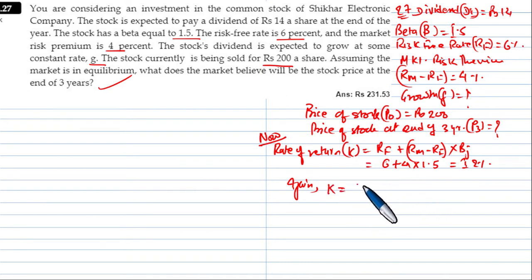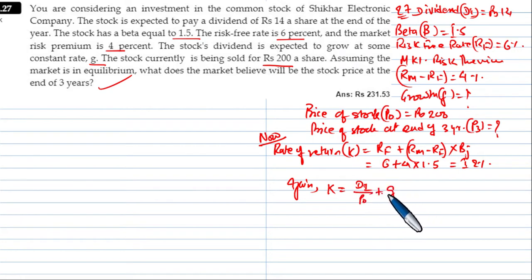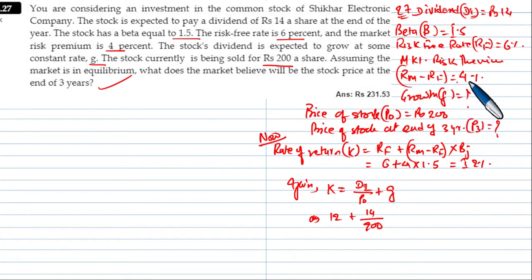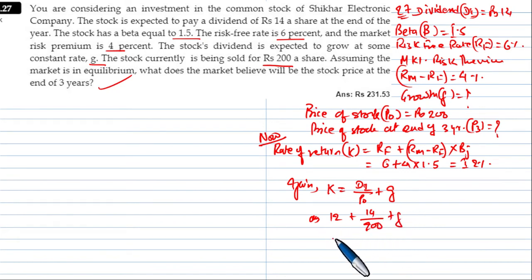Now using the Gordon model formula: k = D1/P0 + G. We know k is 12%. D1 divided by P0 gives us the dividend yield portion, and we add G. So 12% = D1/P0 + G, which gives us about 7% for the D1/P0 component.